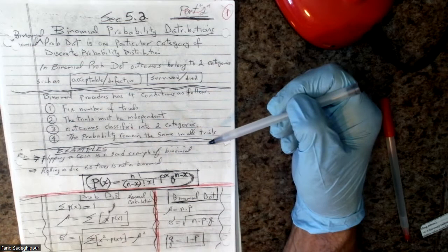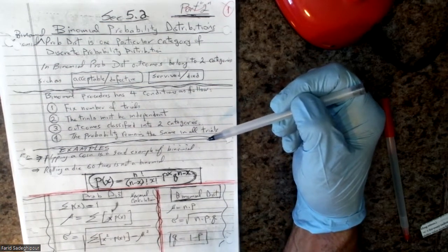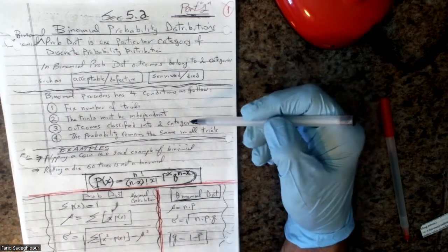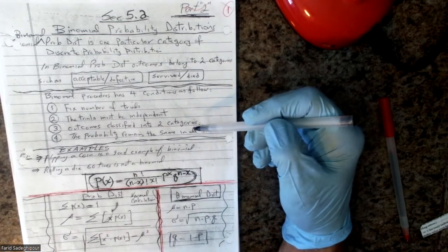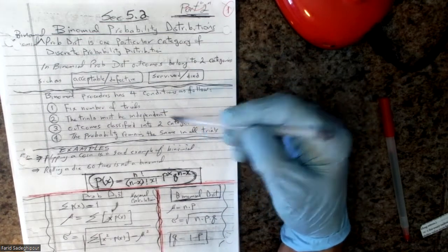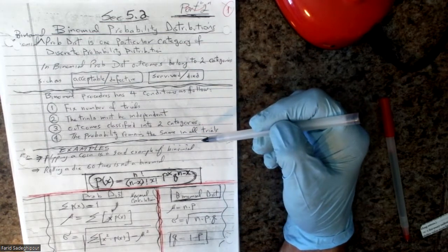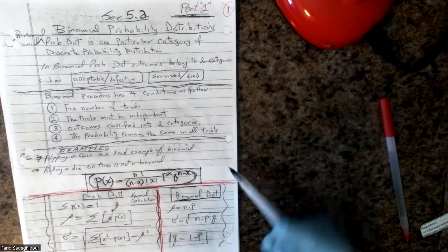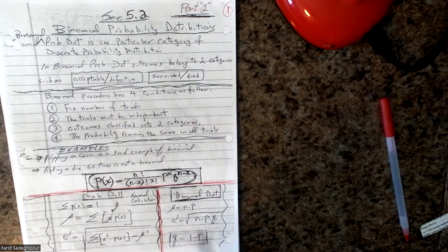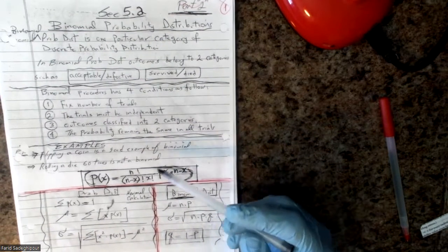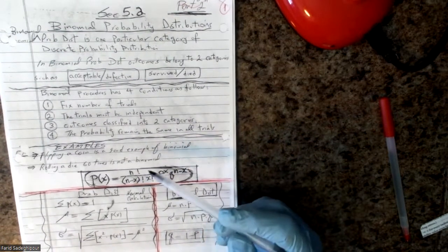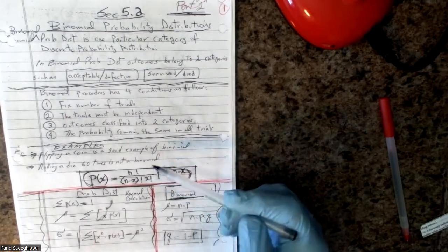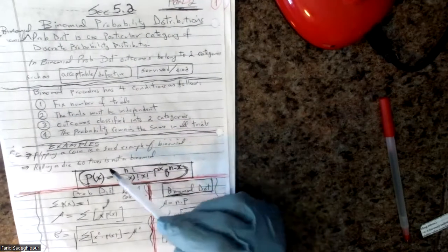Like in the case of flipping a coin, it doesn't matter how many times you toss it — there's always a fixed number of trials and the probability is always 50%. Rolling a dice 60 times is not a binomial because it has more than two outcomes.